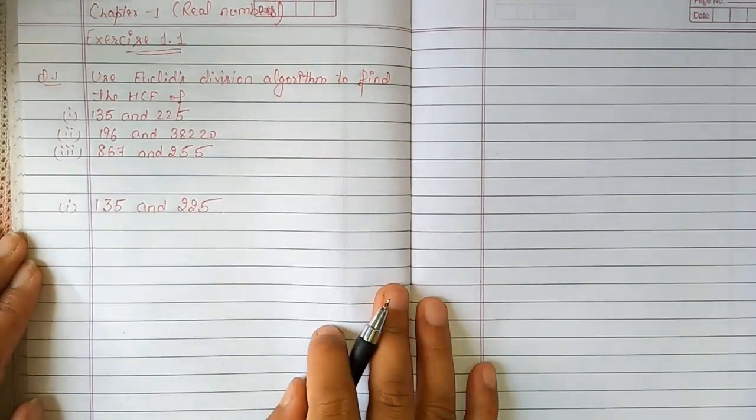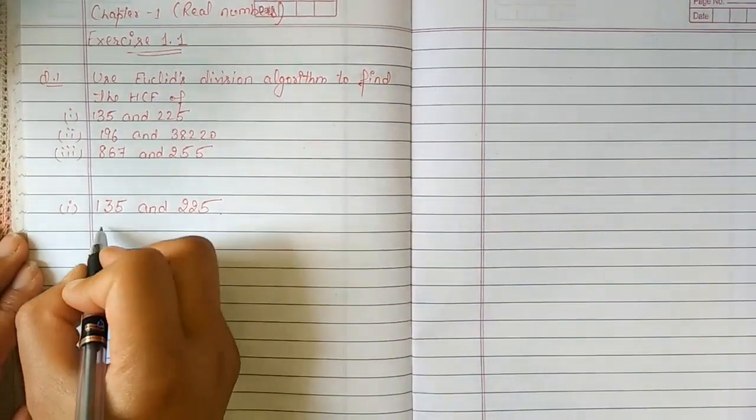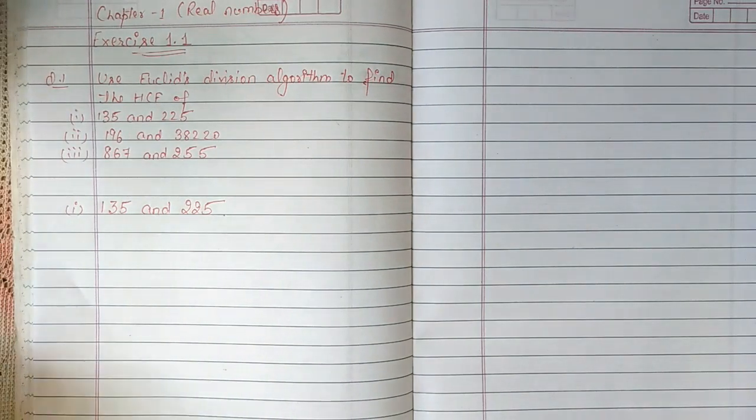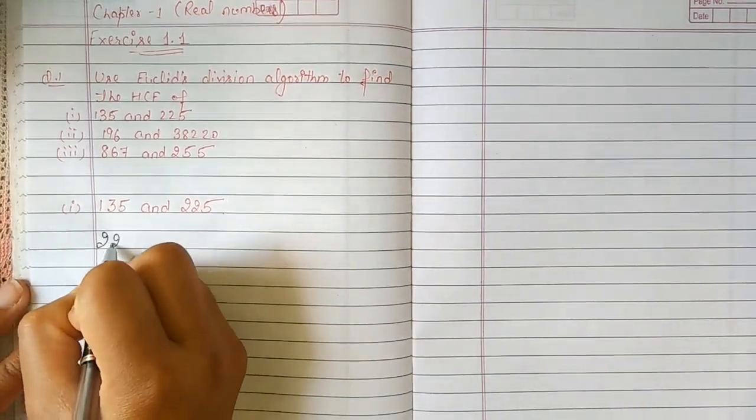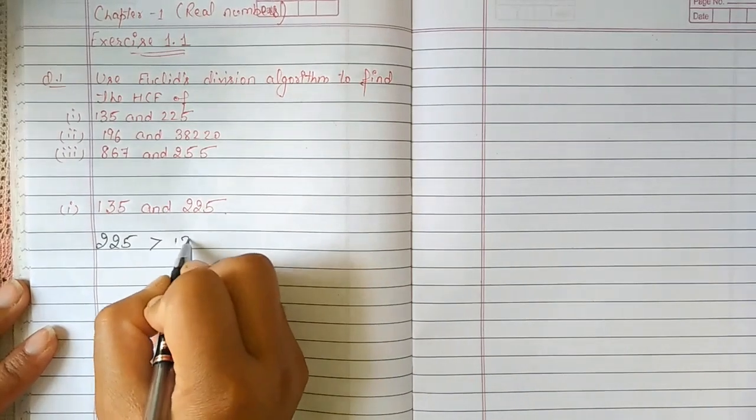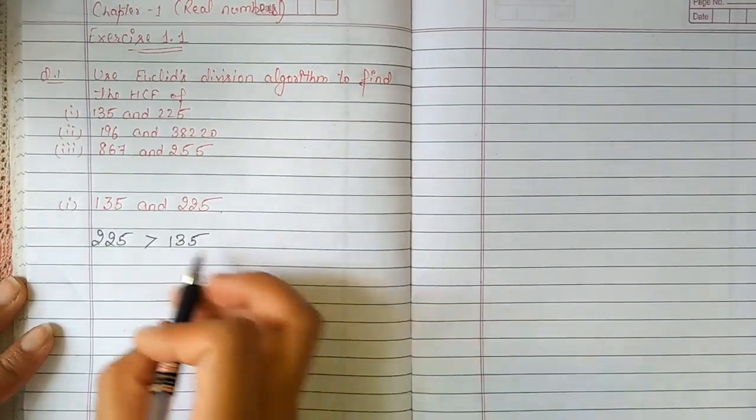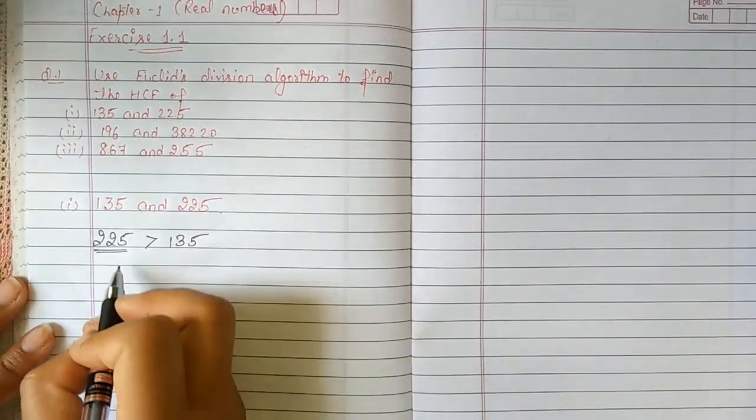Our first step to find HCF is we have to see first which term is big. Obviously 225 is bigger than 135. We have seen that this is greater.